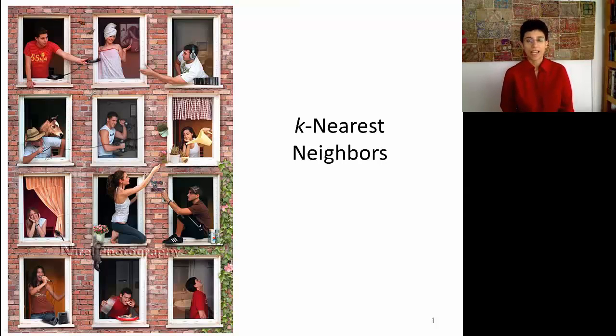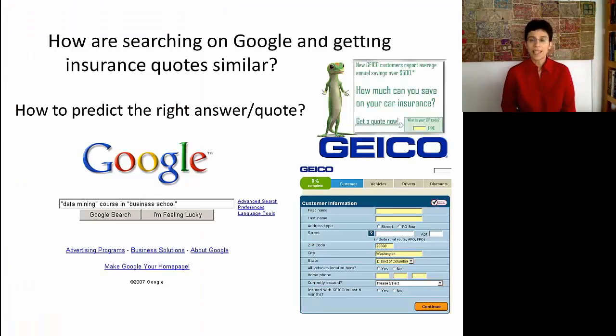In this session, we're going to look at our first classifier called the k-nearest neighbors. Actually, we did talk about another classifier earlier on, which was the naive rule. Remember, that's going to be the benchmark always. What is the k-nearest neighbor algorithm? Let's think of some applications to see what's the idea behind this classifier.